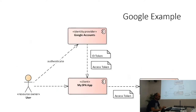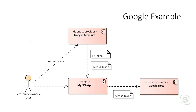Before going further, I'll show a very simple example using Google. Most big companies — Google, Microsoft, Twitter — use OpenID Connect for their own purposes. When you want to access Google Docs as an external application, you do it through OpenID Connect. In this scenario, the identity provider is Google Accounts, I have my SPA application, I want to access Google Docs, and Google Docs asks for an access token to authorize your access.